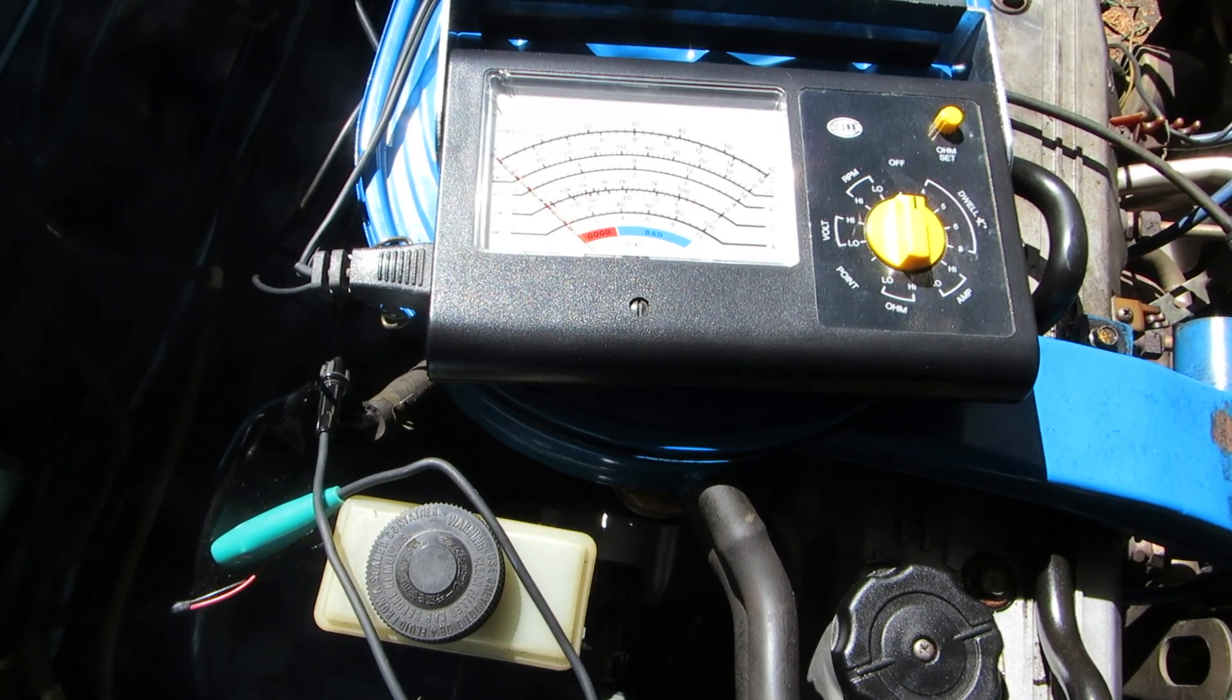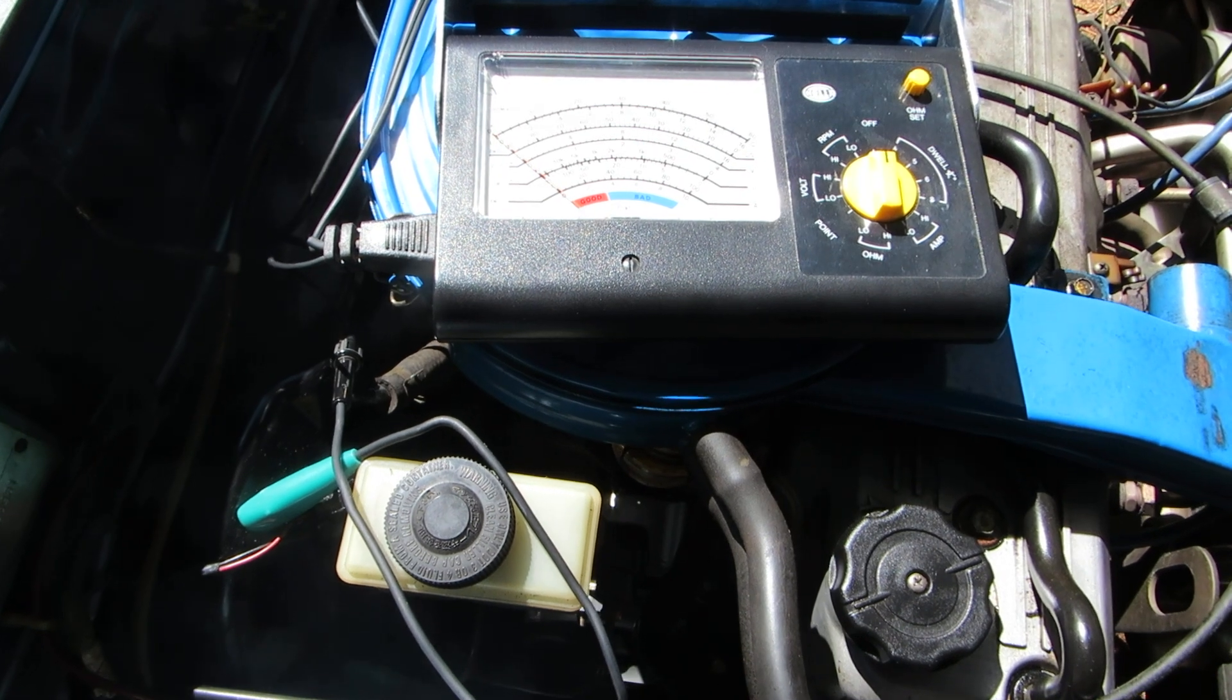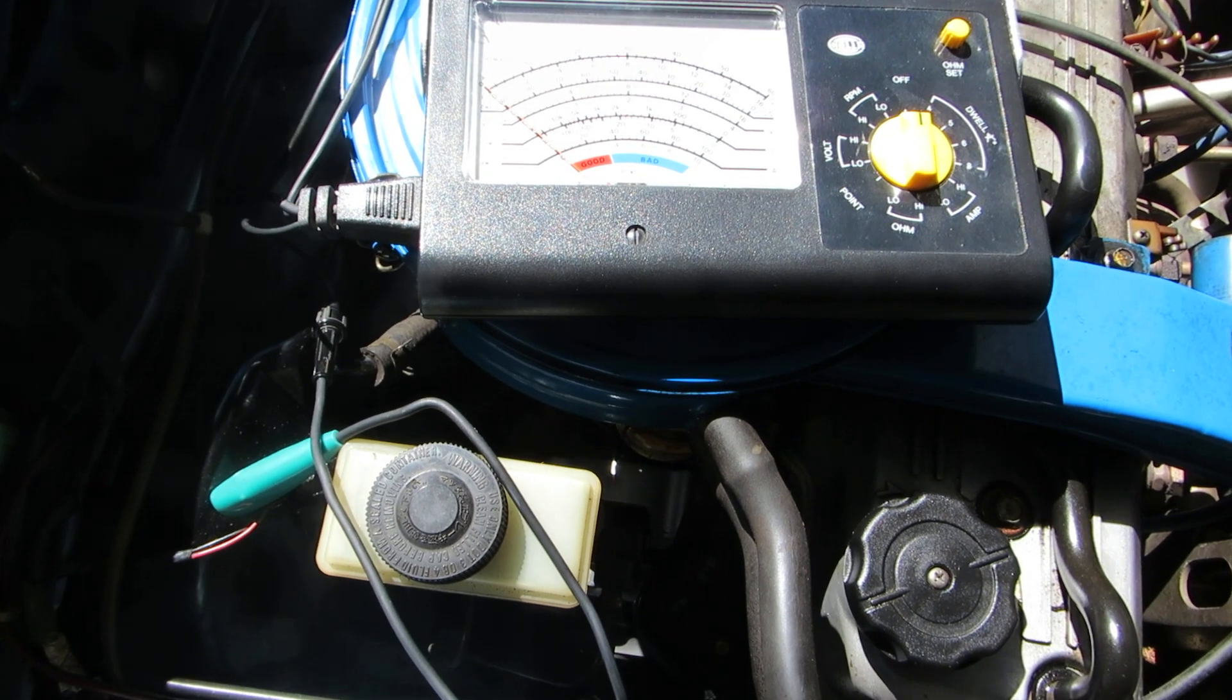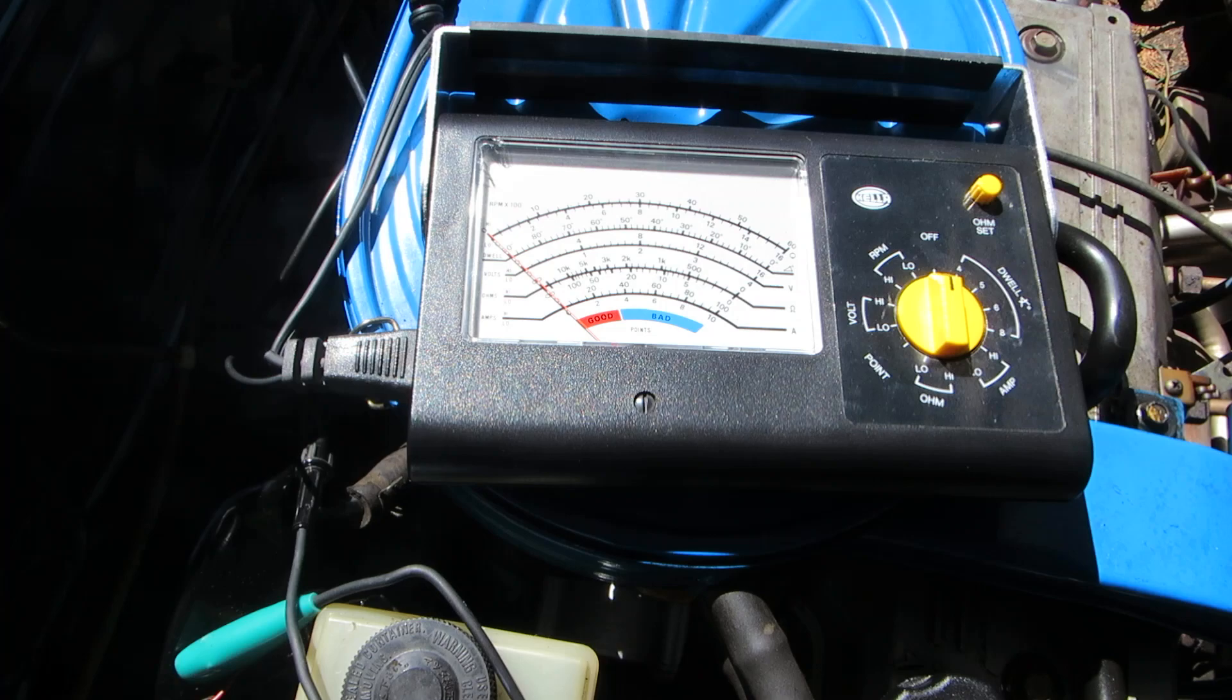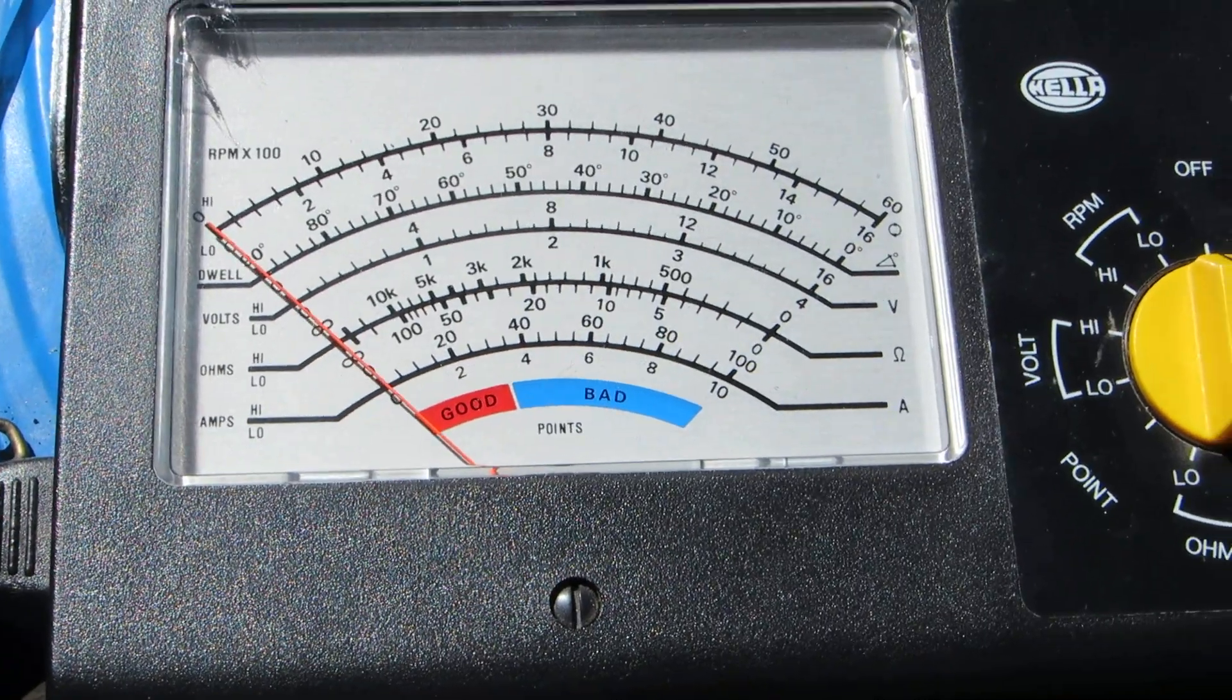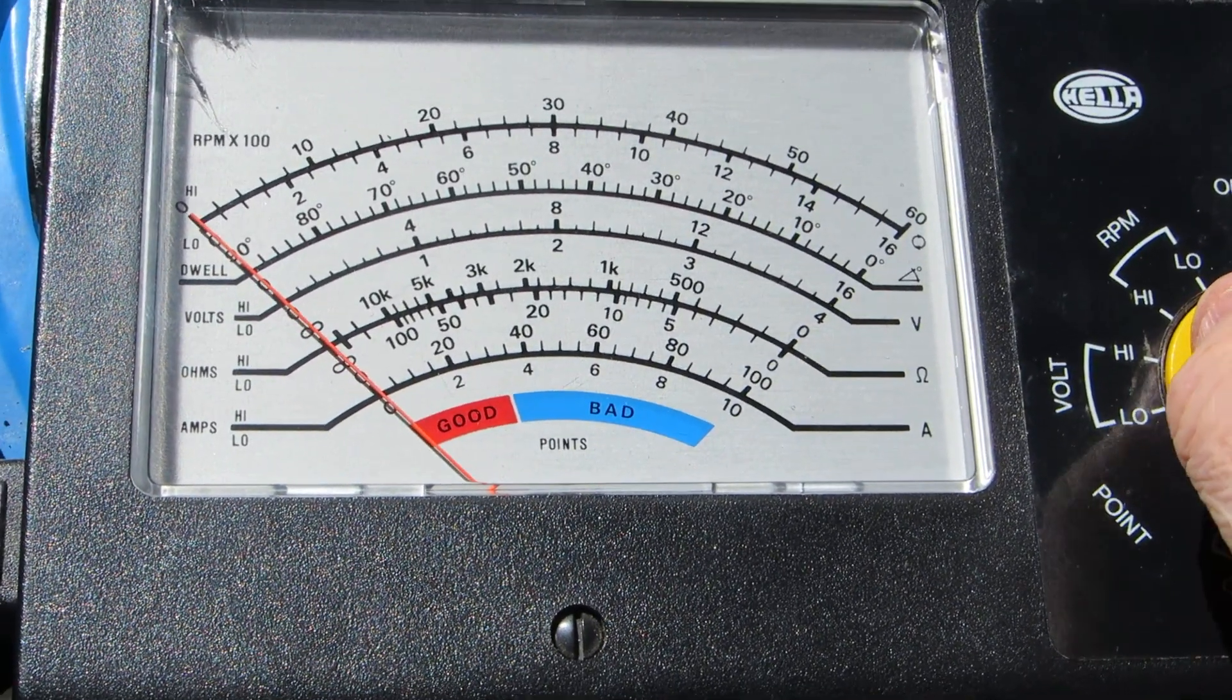Right, I'm going to check the dwell angle on my vehicle because it's got points in it. It should be 52 degrees plus or minus 2 degrees. So there's the dwell angle meter, I'll just turn it on. Here we go.